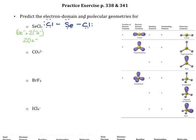Now to make sure I've got a correct Lewis structure, I'll verify the octets. The chlorine on the right has 6 non-bonding electrons and 2 bonding electrons, so it feels like it has 8. The chlorine on the left is bonded the same way, also giving it 8. In the center, Se has 4 non-bonding and 4 bonding electrons, so the central atom also feels like it has a complete octet.